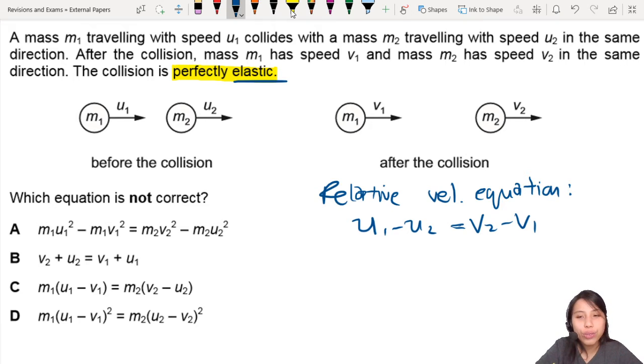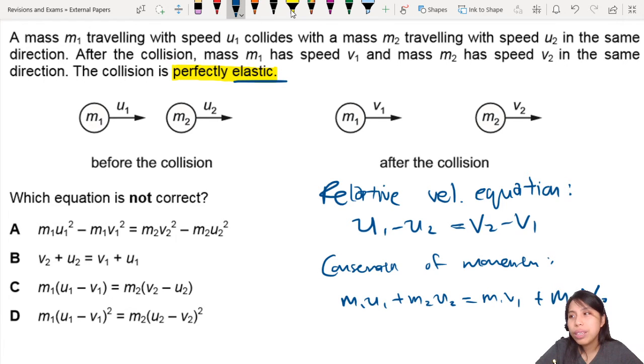And you also have your classic conservation of momentum equation, conservation of momentum, which is the very long one, m1 u1 plus m2 u2 equals to m1 v1 plus m2 v2. I'm blocking behind my head, but you get the idea.